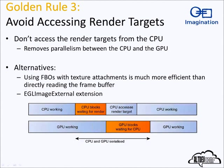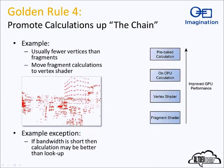Rule three — don't access the render target from the CPU that you want the GPU to draw to. It's even worse than it sounds because it completely ruins the parallelism between CPU and GPU. It's like having multiple cores and making each wait for the other — generally a bad idea, and in some ways still engineering rule number one. Rule four — promote calculations up the chain. There are far more fragments on a 1080p screen than vertices in your scene, so if you can do calculations per vertex instead of per fragment, you're doing them far fewer times. If you can do it once per frame on the CPU, or even pre-compute in your studio, that saves even more.